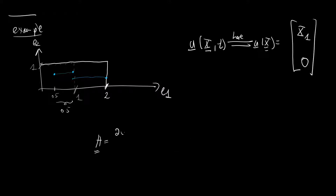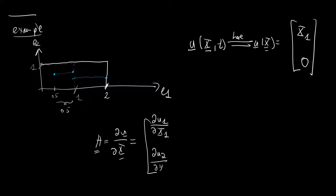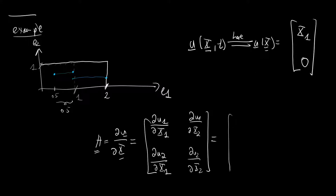Now let's take the displacement gradient. H is the derivative of u with respect to the reference configuration. We derive the vector function with respect to x1 and x2. The result is: du1/dx1 = 1, du2/dx1 = 0, du1/dx2 = 0 (no x2 in u1), and du2/dx2 = 0. So our displacement gradient H is the matrix [[1, 0], [0, 0]].